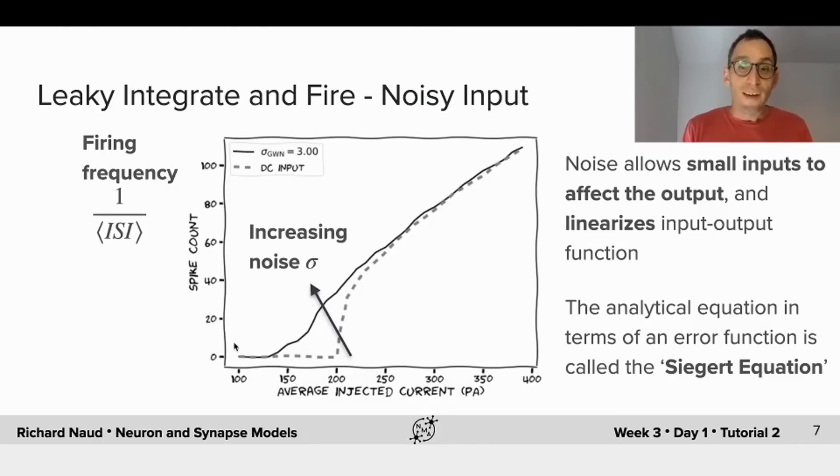Now, the analytical equation that describes this curve is also known. It's called the Siegert equation. It is made of error function, but it's a fairly complicated equation, so I don't show it here.